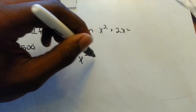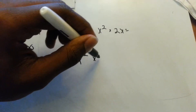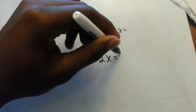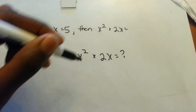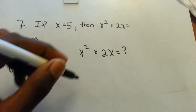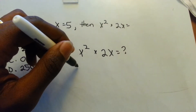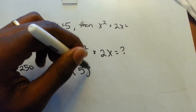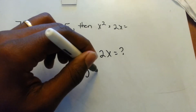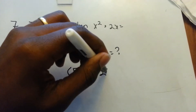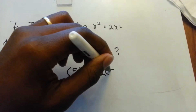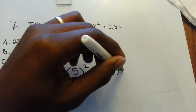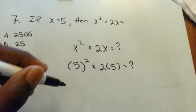So we have x squared times 2x equals what? Plug 5 in for x: 5 squared times 2 times 5 equals what?